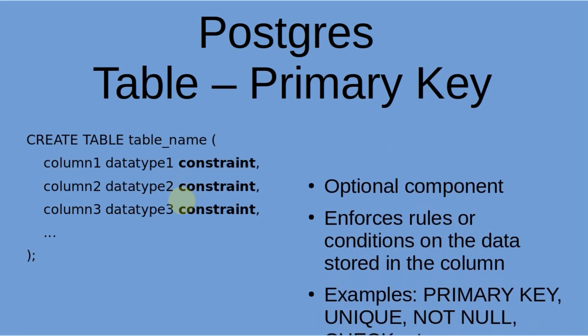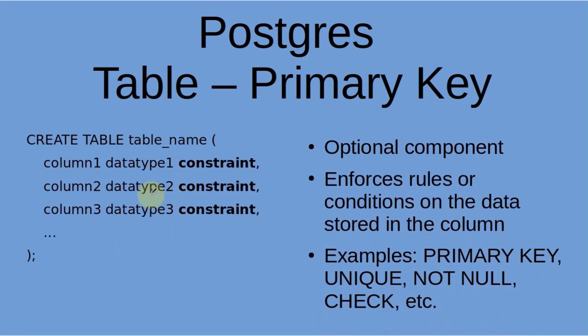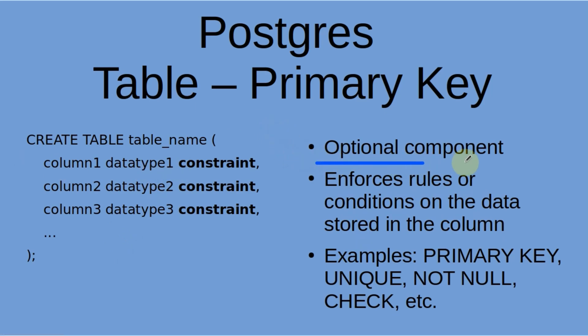Last but not least is the constraint. A constraint is an optional component — that's the first item to discuss. Why optional? Because you don't have to have them on each column. That's the biggest item to remember.